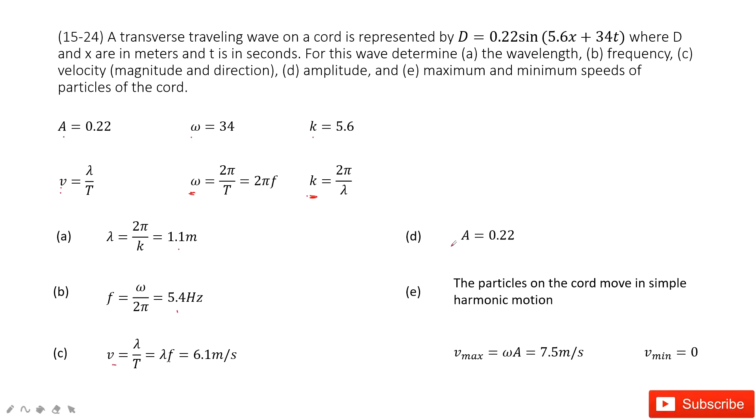The amplitude is 0.22. For maximum and minimum speed, we use simple harmonic motion from previous chapters. Maximum speed is omega times A, and minimum speed is 0. Thank you.